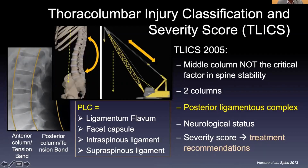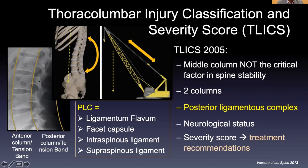The Thoracolumbar Injury Classification Severity Score, or TLICS, is a grading scale that offers a guide for surgeons when looking at a patient's radiographic imaging and neurologic exam. It gives you an idea of the urgency or timing of surgery — does this patient need surgery or not?